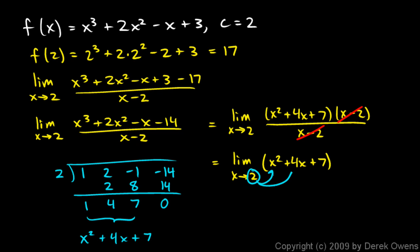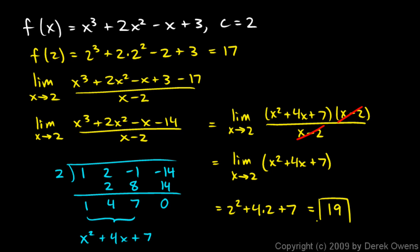That leaves the limit as x approaches 2 of x squared plus 4x plus 7. We substitute x equals 2: 2 squared plus 4 times 2 plus 7 equals 4 plus 8 plus 7 equals 19. That's the answer.